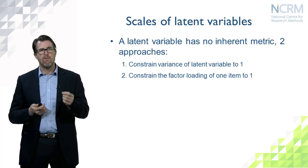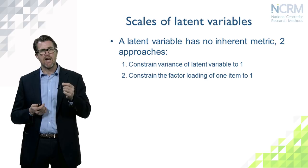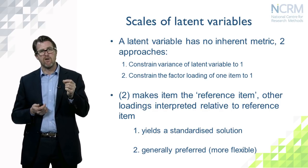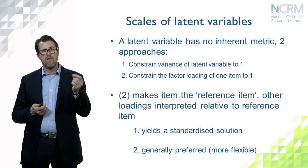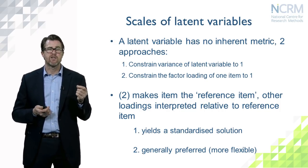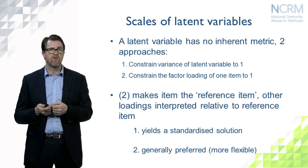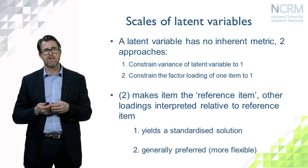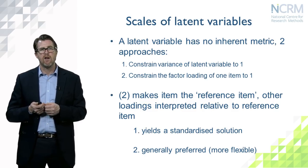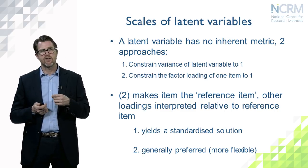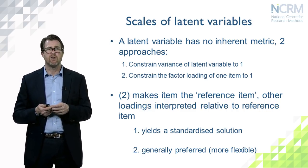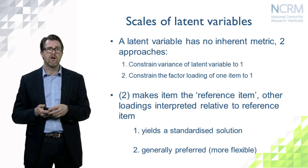The second approach is to constrain one of the factor loadings to take the value one. By doing this, we take the scale from that particular item — the reference item. The latent variable will then have the same scale as that reference item: if it's measured on a 1-to-5 scale, the latent variable will be on a 1-to-5 scale. This is generally preferred because we can also obtain a standardised solution alongside the unstandardised one.